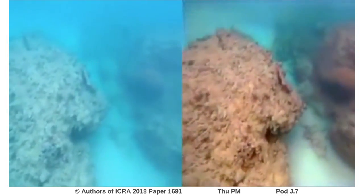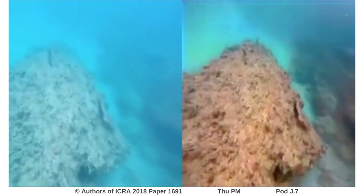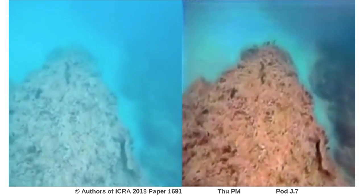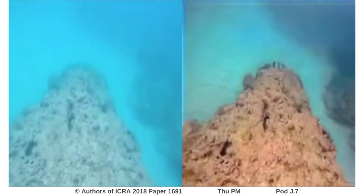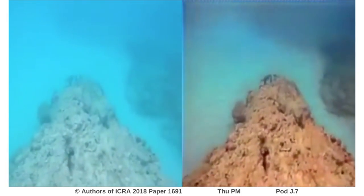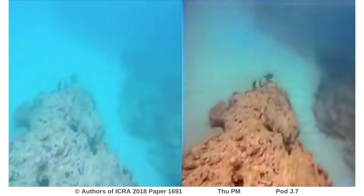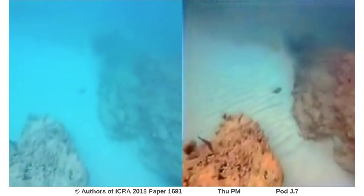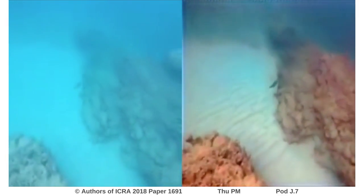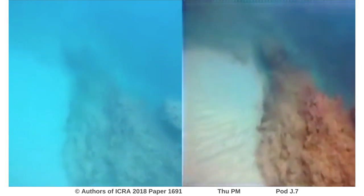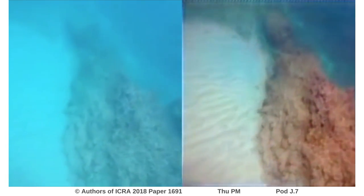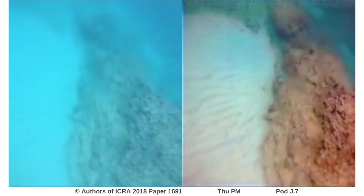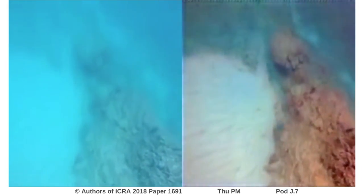We present Underwater GAN, a method using generative adversarial networks to correct and enhance underwater imagery. The system is able to take in a distorted image from an underwater domain and restore colors, objects, as well as remove various types of noise. Here, we show a side-by-side comparison with an original video taken in Barbados.